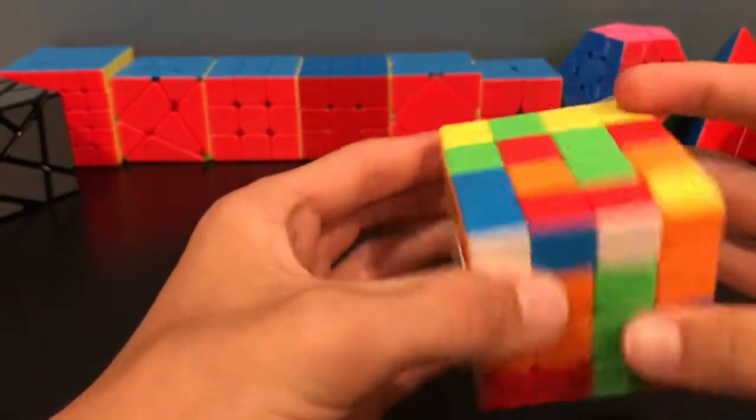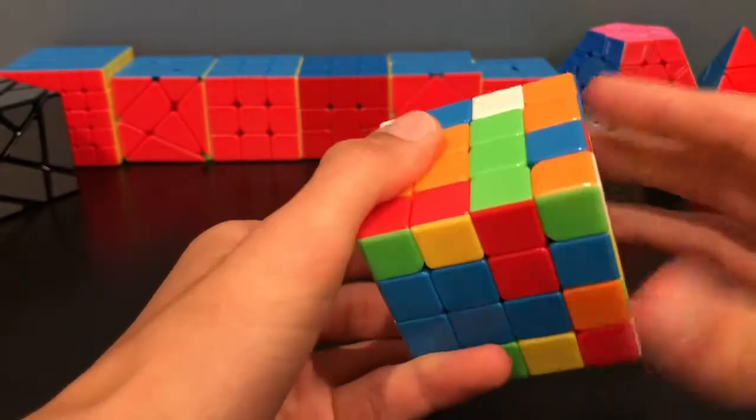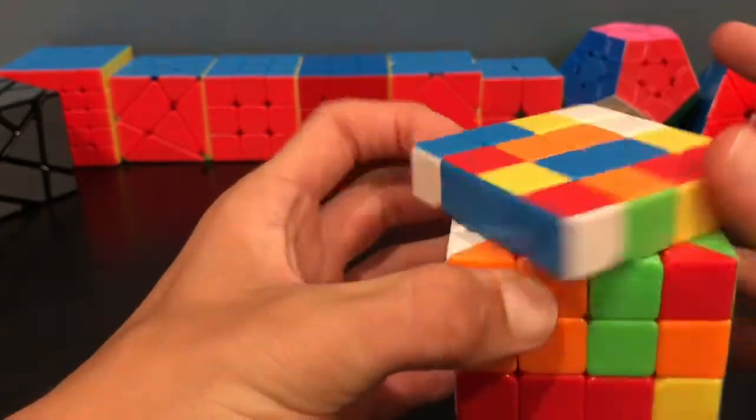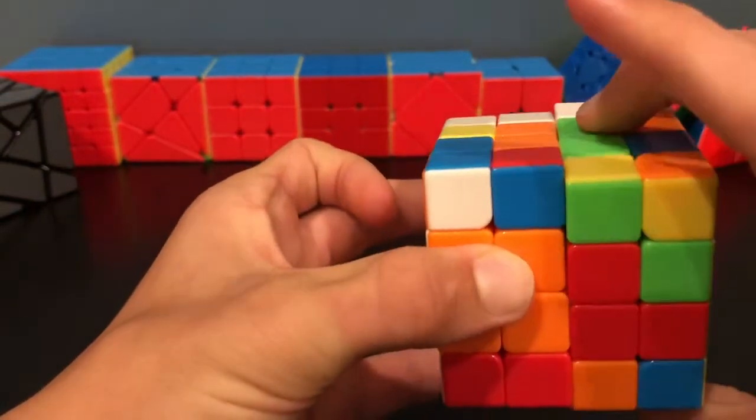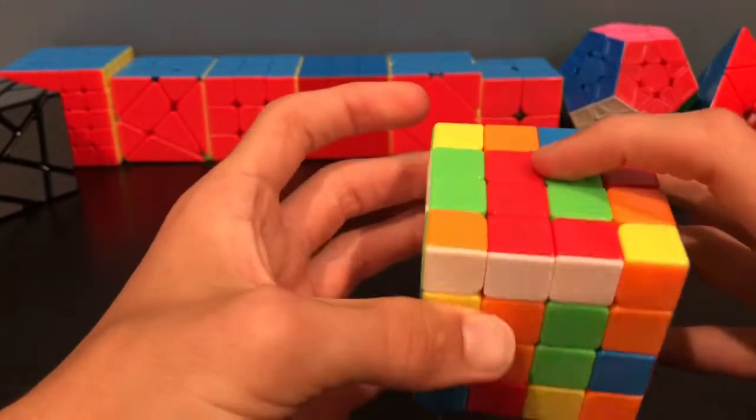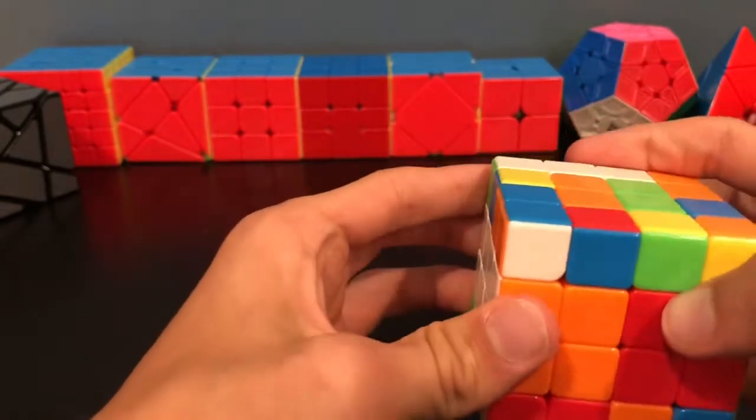So start with the one on the bottom. So it'll be blue. So just move this. Here's that blue piece. Here's the other one, and I'll move it down. So then you can either do front or the back next. I'll just do this front one.